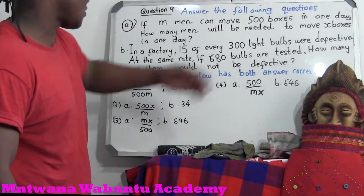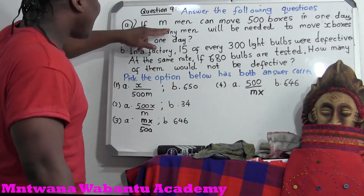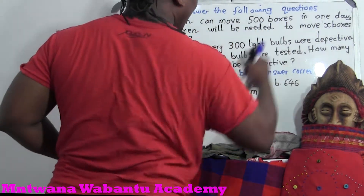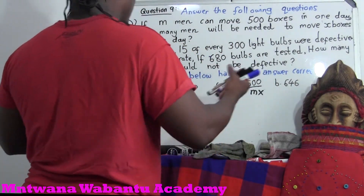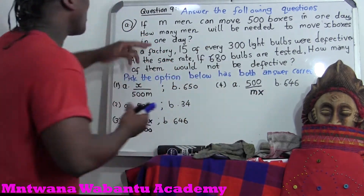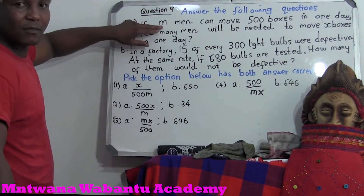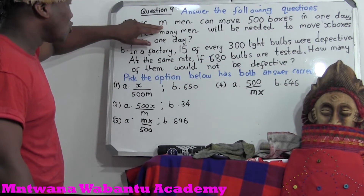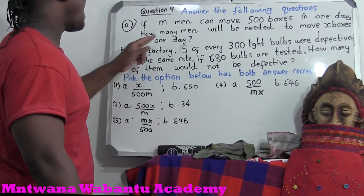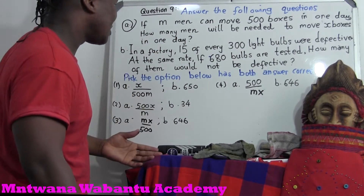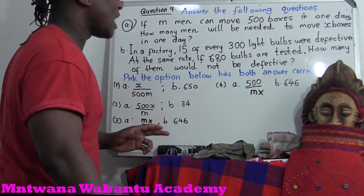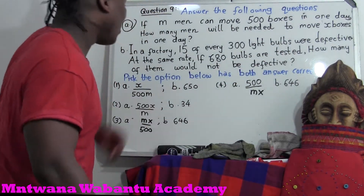Now the question says answer the final questions. If M men can move 500 boxes in one day — M means it could be any number, like 5, 10, or 7. So we don't know how many M is. Can move 500 boxes in one day. Now, how many men? We don't know how many men we're looking for. We need it to move X boxes. We don't know the number of boxes, in one day.